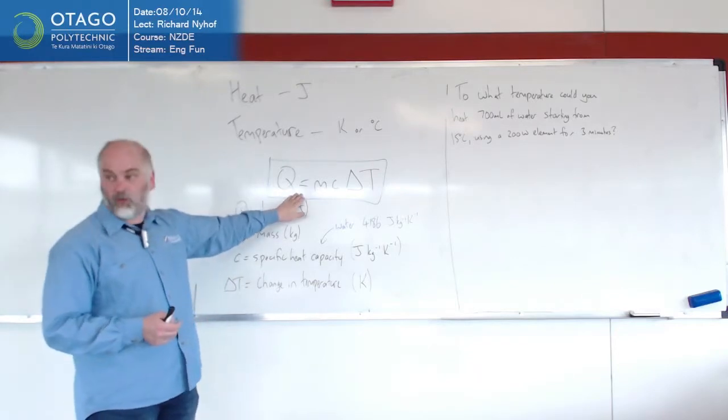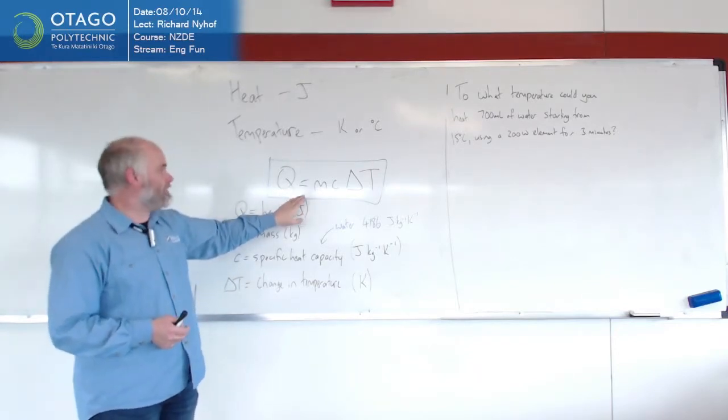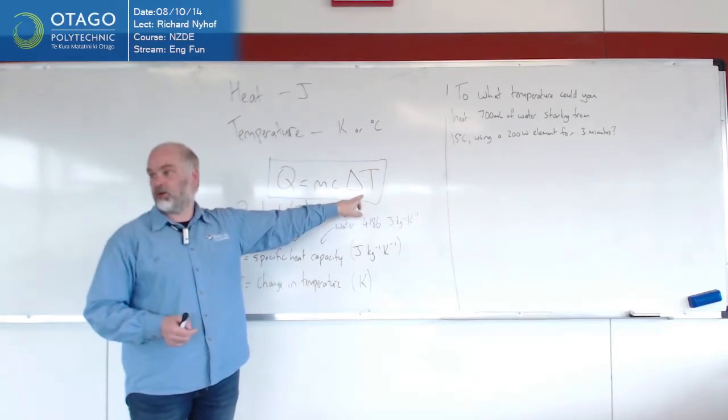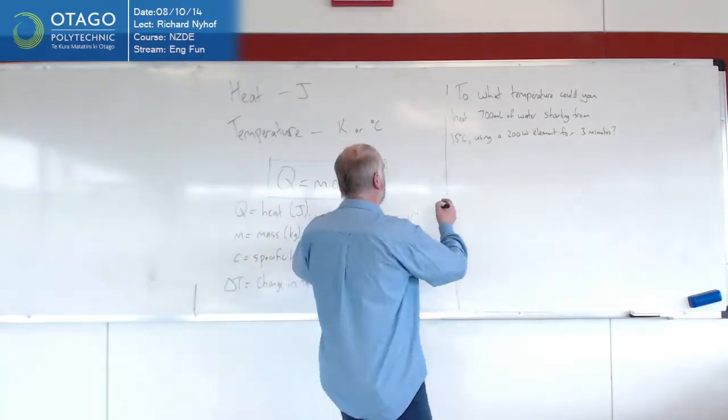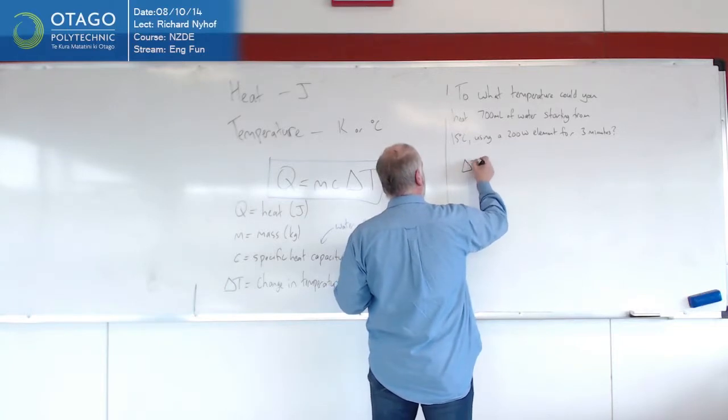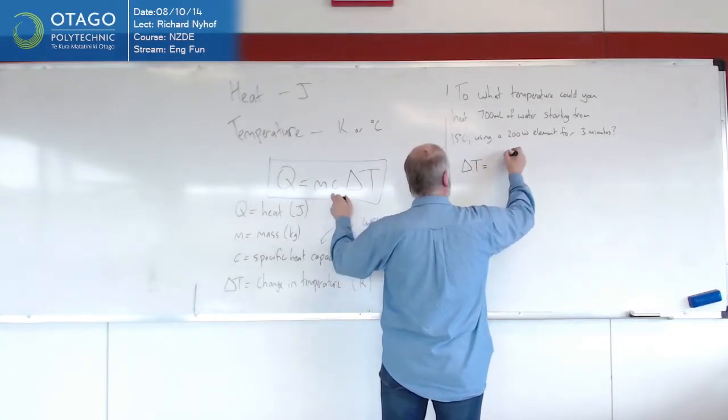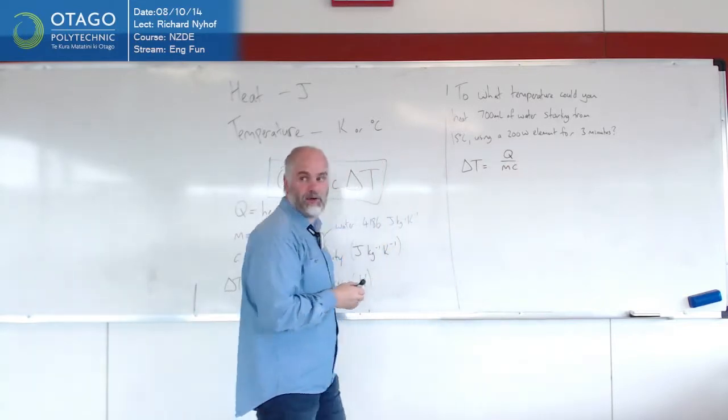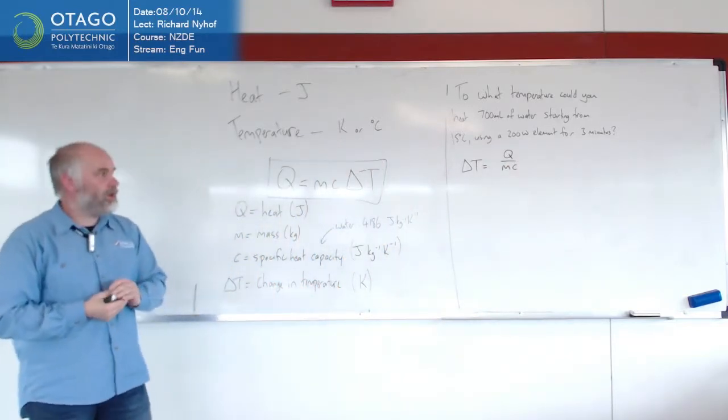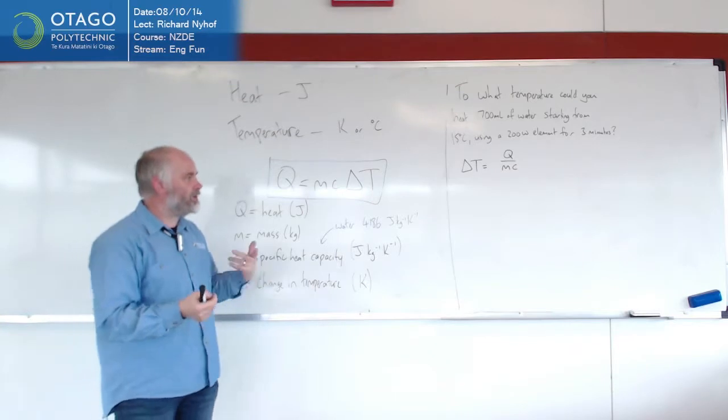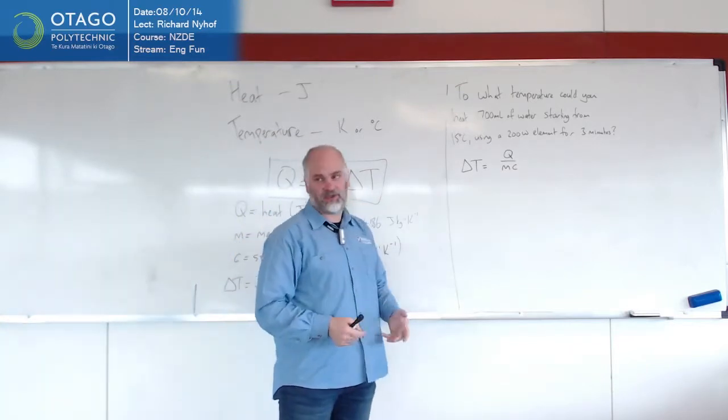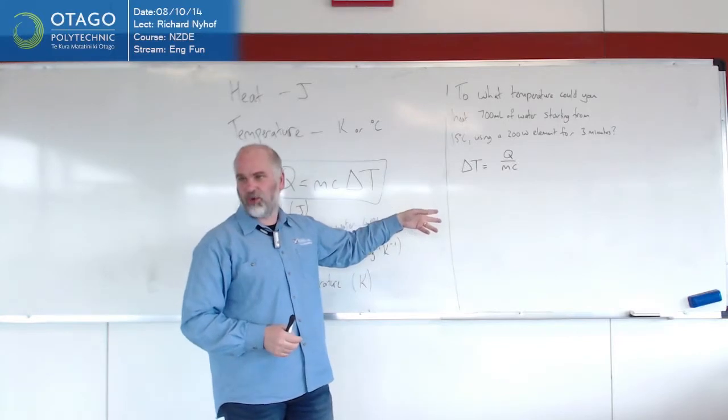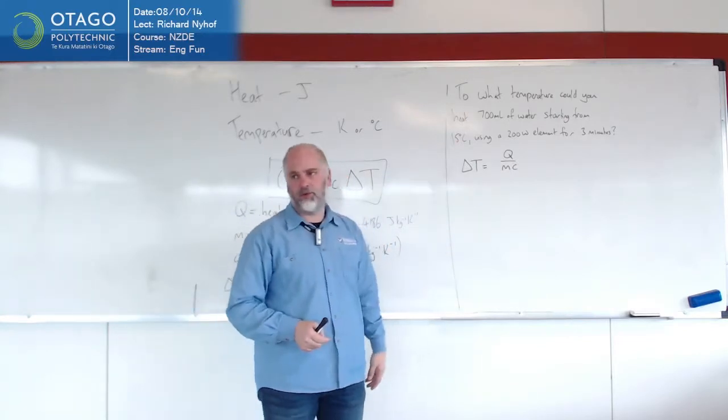So we're going to use the formula we used before, except this time we're trying to find out how much the temperature changes by. So we need to rearrange this formula to give us change in temperature is Q divided by MC. That's what we're looking for, so the amount of energy we're going to pump into it is Q, M and C, mass and specific heat capacity, figure out how much the temperature changes by, and add that on to 15.